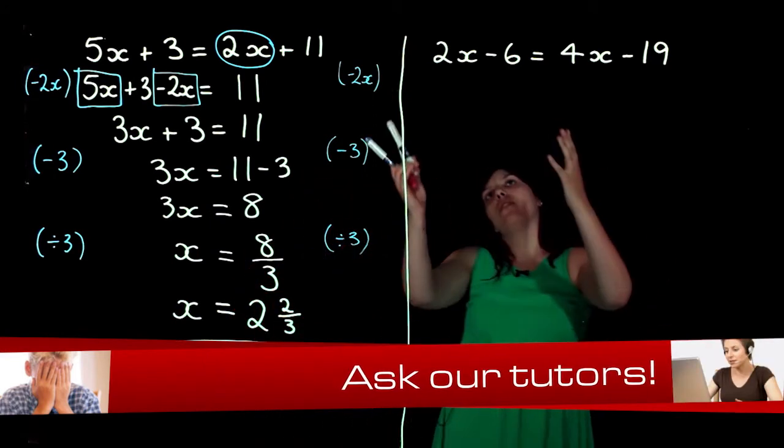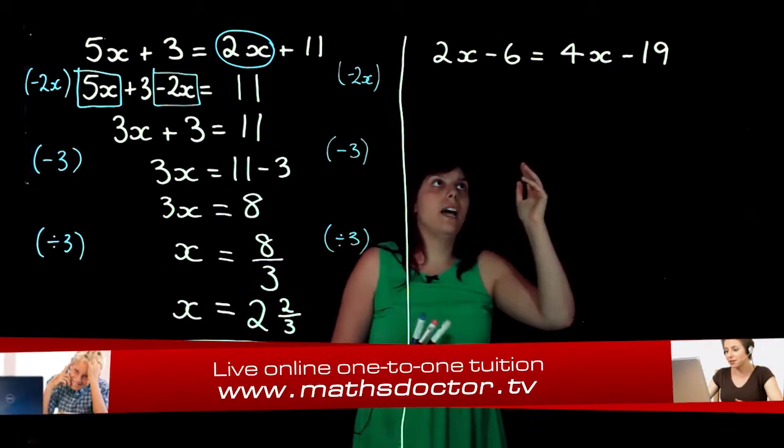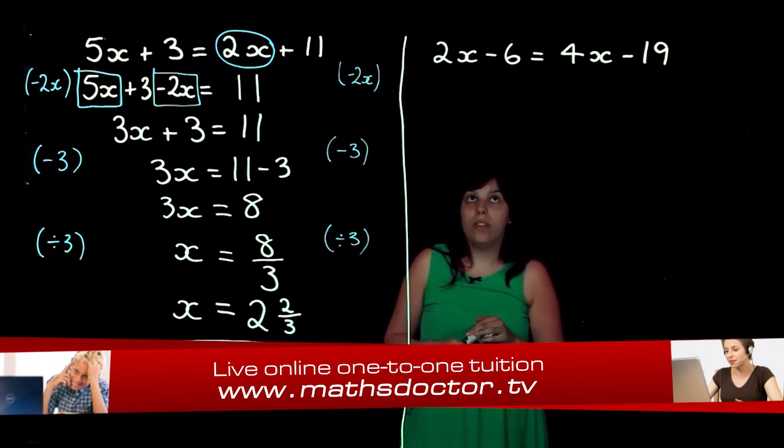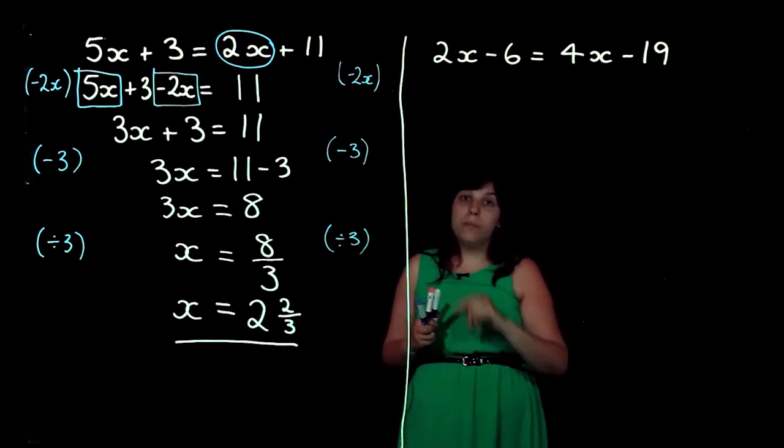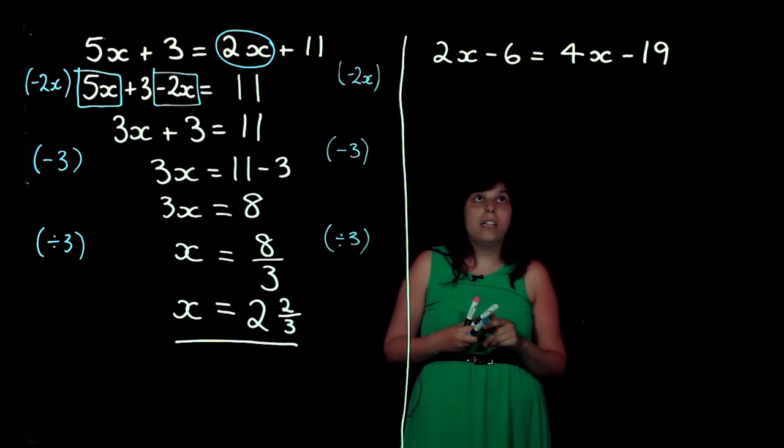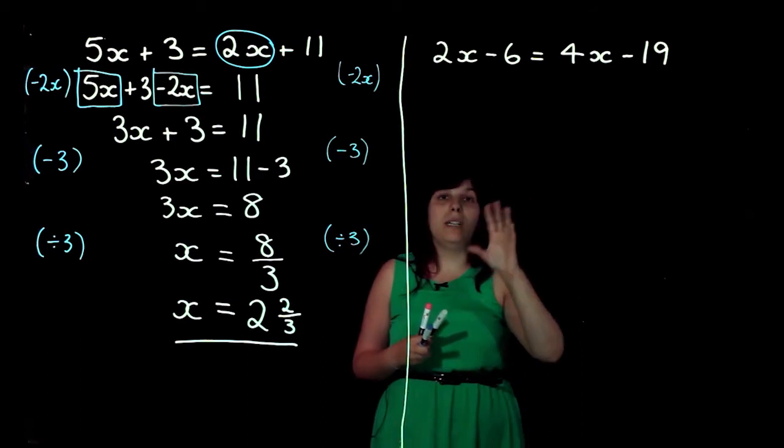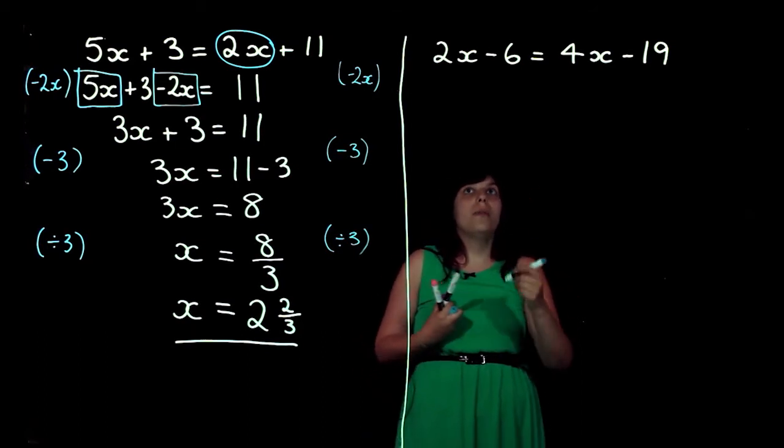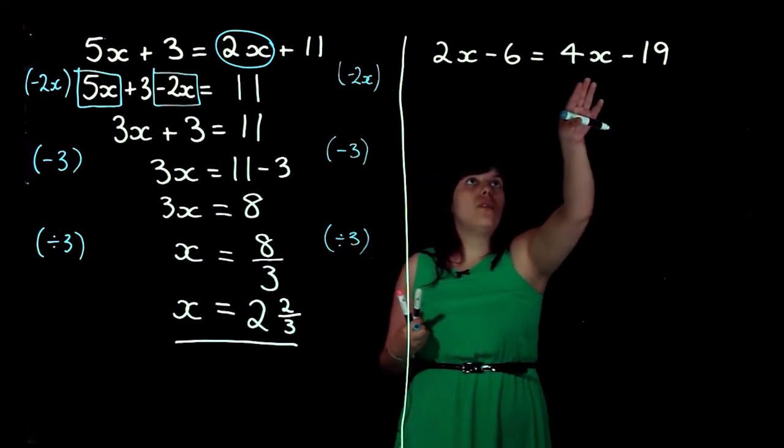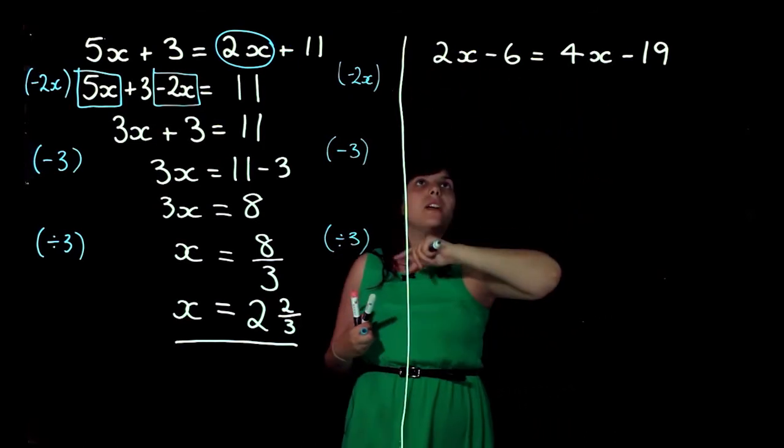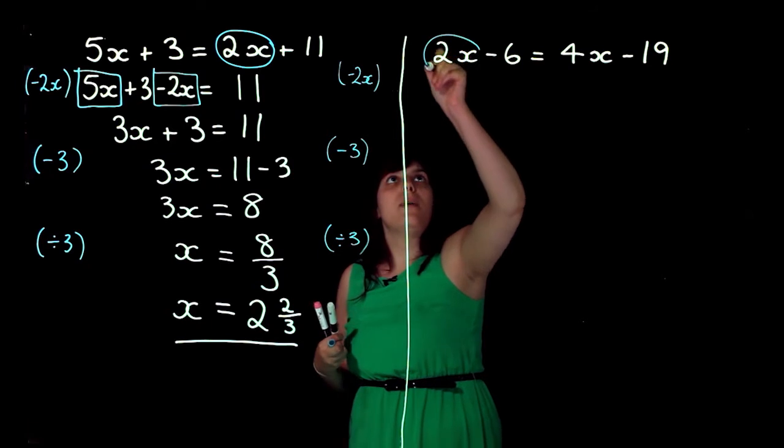Now, if I look at this one, I've got 2x minus 6 on one side and 4x minus 19 on the other. So, as we did with the first one, I need to find the smallest x. So, I've got 2x and 4x. They're both positive. So, my smallest one is going to be 2x.